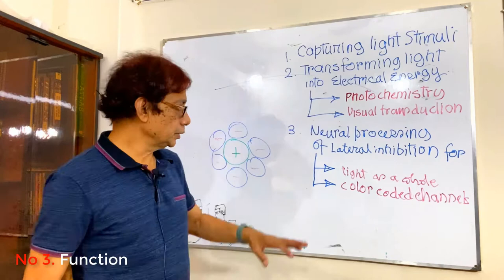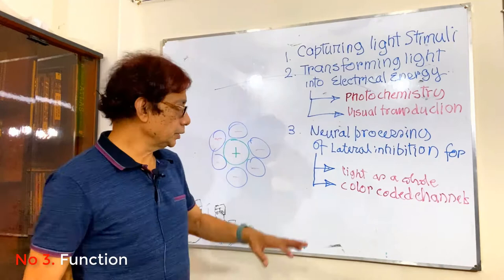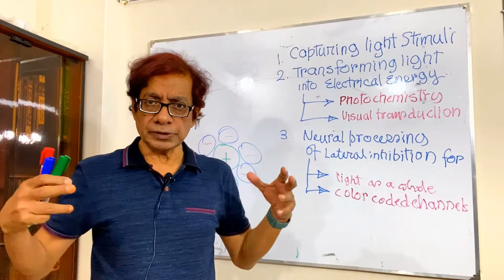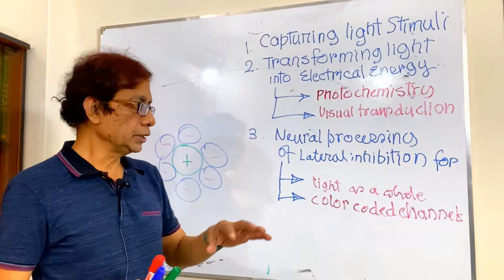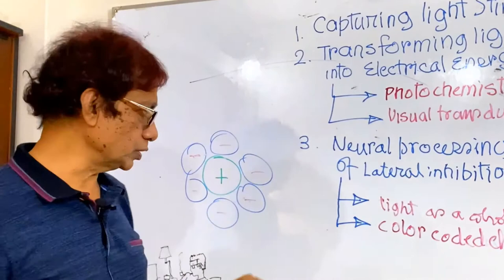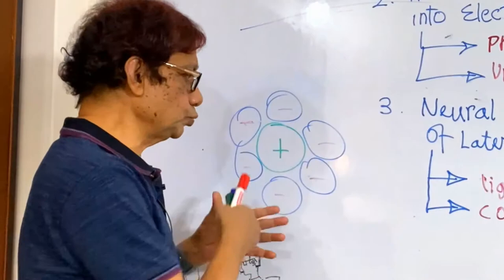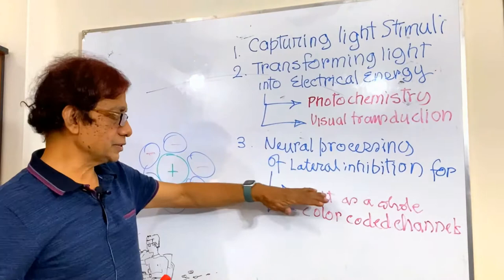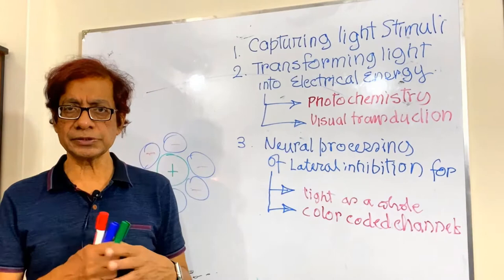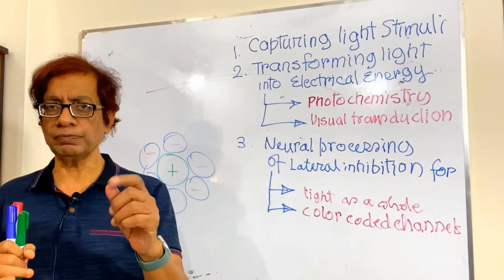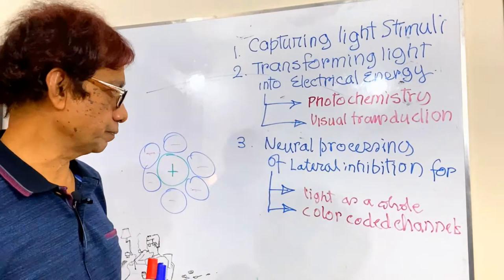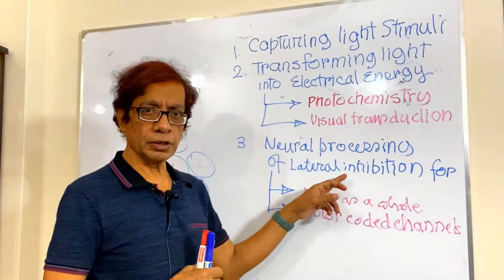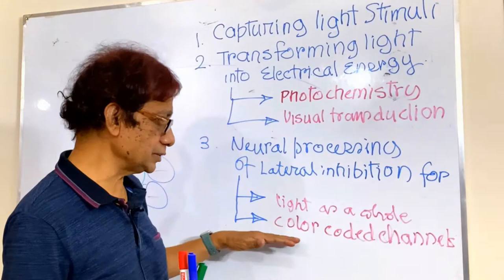What is the third function? The third function is essentially lateral inhibition. Elsewhere in the sensory nervous system, once a sense is received it is further discriminated from its surroundings — it is localized and intensified through the process of lateral inhibition. A similar process happens in the retina, and it is further complicated because the retina not only receives a single wavelength of light but also various color-coded light. So the third function is neural processing via lateral inhibition for light as a whole as well as for the color-coded channels.